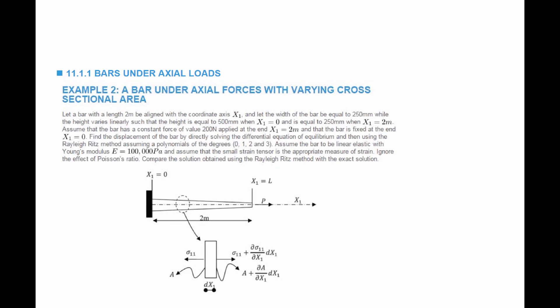We're going to look at this method applied to a bar under axial load. We have a bar of length 2 meters aligned with the coordinate axis x1. The width of the bar is constant at 250 millimeters while the height varies linearly, equal to 500 millimeters at the support and 250 millimeters at the other end. The bar has a constant force of 200 Newtons applied at the end x1 equal to 2 meters.